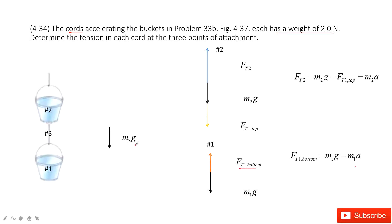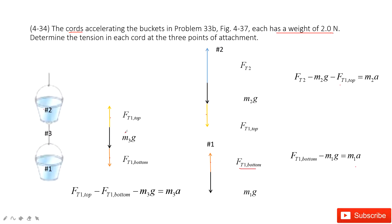This is FT1 bottom. Similarly, we have a force — object 1 acts on it. This is a pair of forces in Newton's third law, so this is FT1 bottom. And also for object 2, it still has the force FT1 top. So we can write the equation: FT1 top minus FT1 bottom minus M3g equals mass times acceleration. So we have these three equations. Can we find the tension on each cord — FT1 top and FT1 bottom?